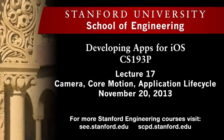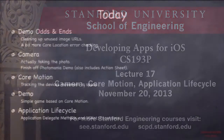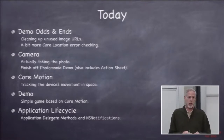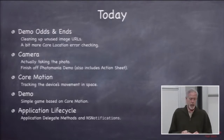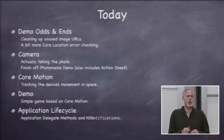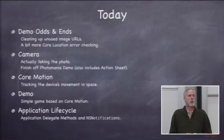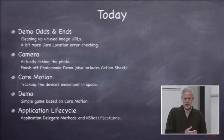Welcome to lecture 17 of CS193P, Fall 2013-14. Today I'm going to spend just a couple of minutes tying up some loose ends from the demo we had on Monday, and then I'm going to talk about taking pictures with the camera and do a demo about that. That's basically Photomania, what we set this all up for in our last demo. Then we'll talk about core motion — the accelerometer, the gyro, and all that. And then, time permitting, we'll talk a little bit about the application lifecycle.